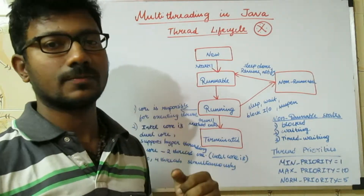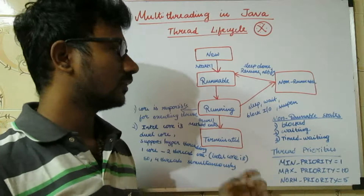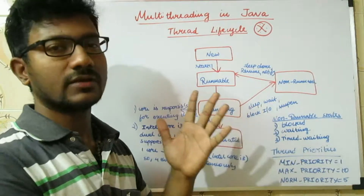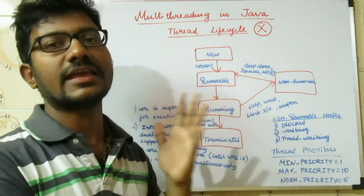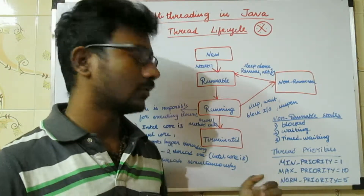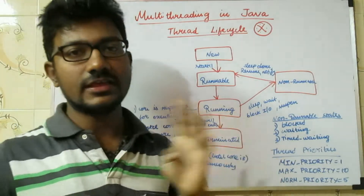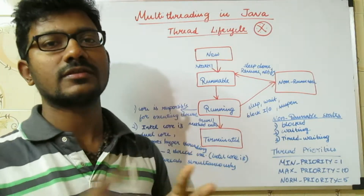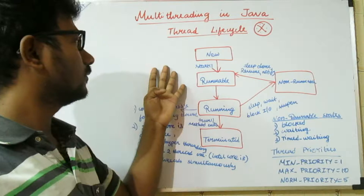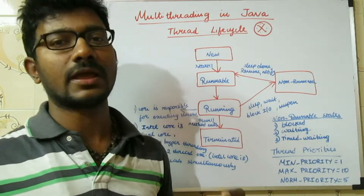Each member is a thread, and each thread has some priority. Technically, the priority range is from 1 to 10 — 1 is the lowest priority, 10 is the highest priority, and 5 is the normal priority. If suppose your father has the highest priority of 10, then your father would be given the opportunity to ride the bike.